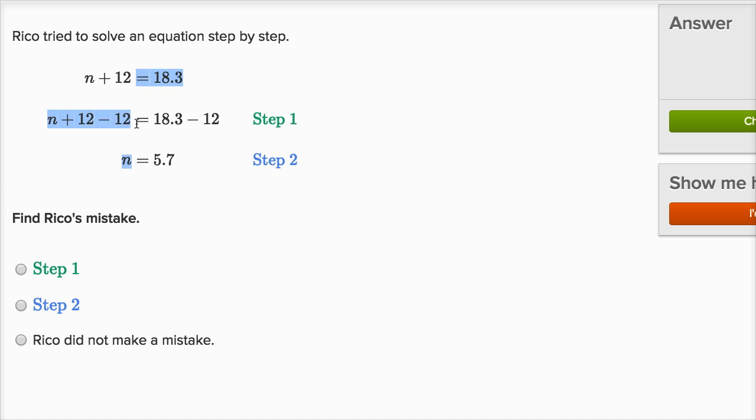So the left-hand side is now n plus 12 minus 12, it was just n, which is why he subtracted 12. So you're just left with an n on the left-hand side. And on the right-hand side, let's see, 18.3 minus 12. Well, 18 minus 12 is six. So this should be 6.3. So he made a little bit of an arithmetic mistake in step. He made an arithmetic mistake. And I think we are all done.